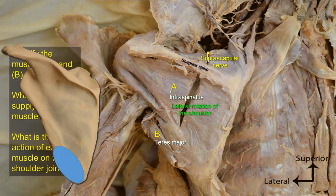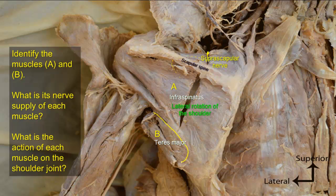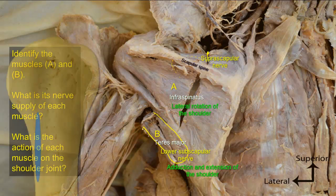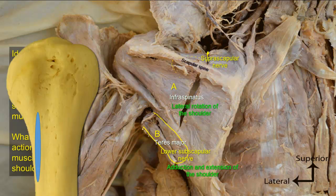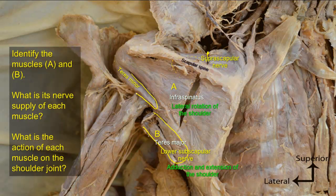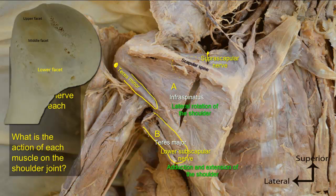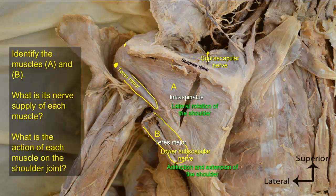Muscle B is teres major, arising from the dorsal surface of the inferior angle and lateral border of the scapula. It is supplied by the lower subscapular nerve from the posterior cord of the brachial plexus, which also supplies subscapularis. Teres major is an adductor and extensor of the humerus at the shoulder joint, because it passes to the front of the humerus to insert into the medial lip of the intertubercular groove. Teres minor, the smaller muscle arising just above teres major, remains posteriorly, attaching to the lower facet on the greater tubercle. The greater tubercle has three facets: supraspinatus attaches to the uppermost, infraspinatus to the middle, and teres minor to the lower.